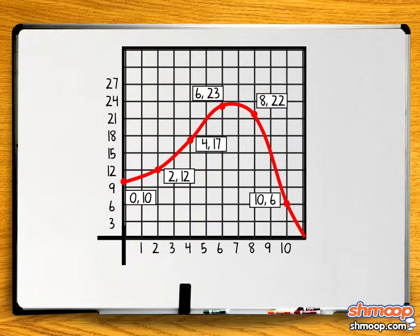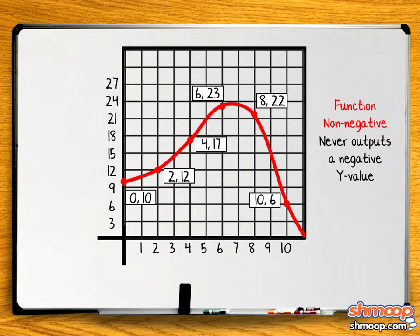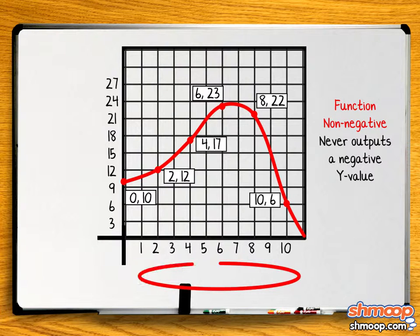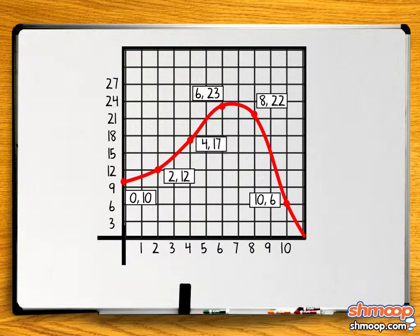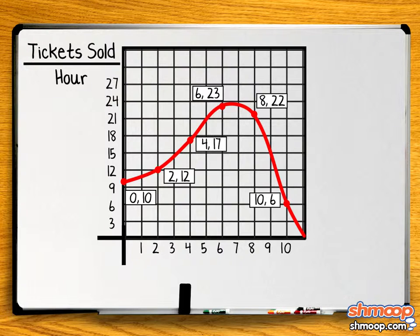Well, let's take a look at this graph. It's important to notice that our function is non-negative, which means the function never outputs a negative y value. The y-axis shows the number of tickets sold per hour, and the x-axis shows how much time has passed since opening.